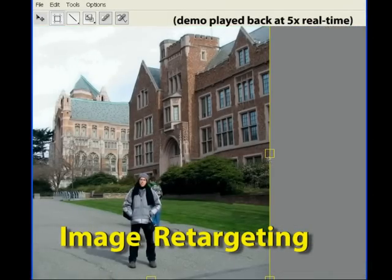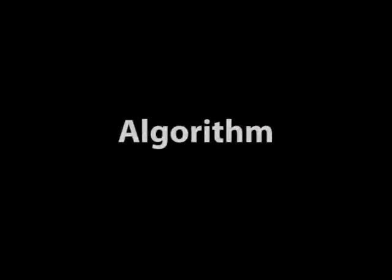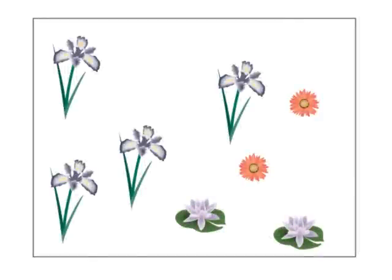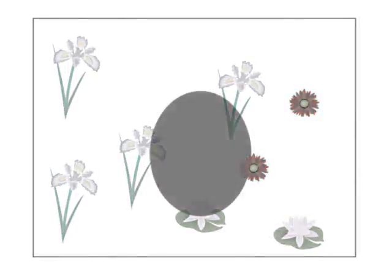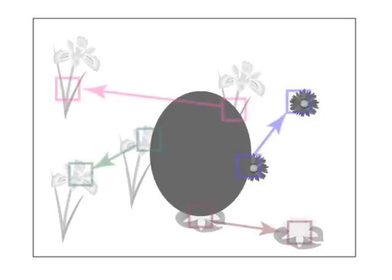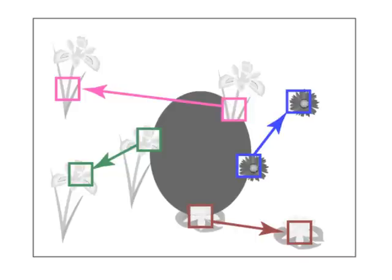Each operation can be controlled with user-specified constraints. This system relies upon a fast, randomized algorithm for approximating the nearest neighbor patch correspondences between two images. Consider the case of in-painting a missing region of an image — many algorithms address this problem by searching for similar patches elsewhere in the image and filling the missing region with their contents.